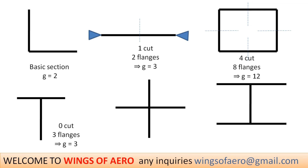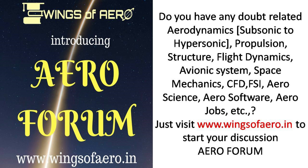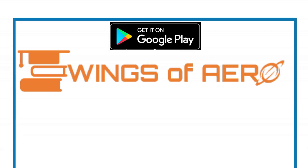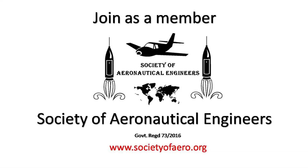For the I-section, one cut creates six different flanges, so g = 1 + 6 = 7. This is how the Gerard Method works based on this formula. Thank you for watching this video. For further inquiries or video requests, drop a mail to wingsofarrow@gmail.com. Don't forget to subscribe for more updates. Take care, stay blessed, inspired, and fly high.